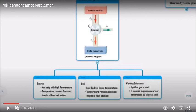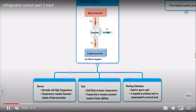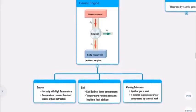The working substance can be a liquid or gas. It expands to produce work or is compressed by external work. The Carnot cycle involves four processes: two isothermal processes and two adiabatic processes.